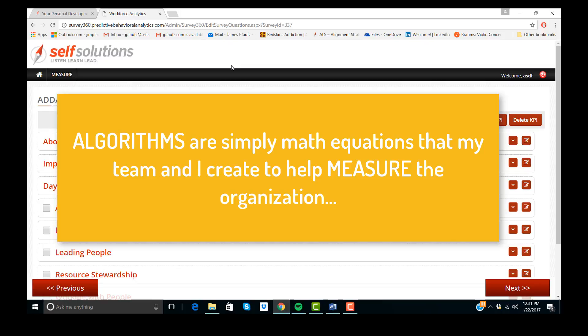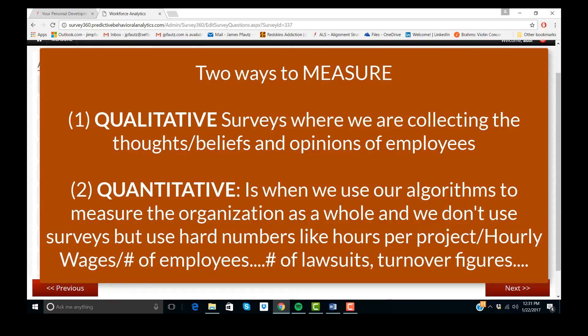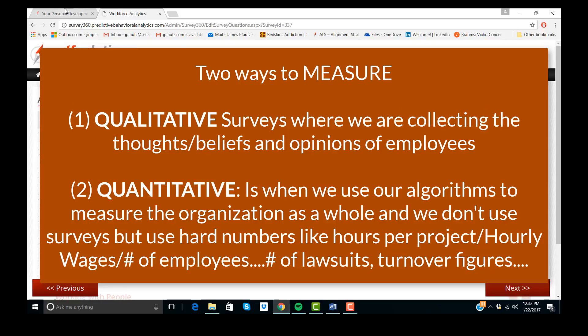Because there's two ways you can measure. There's two things we measure. One is the group. One is the individual. And there's two ways we can measure. One is via surveys. And the other, that would be qualitative. And the other way would be quantitative. And that would be numbers themselves. So we need the ability to add algorithms that I would create to the back end.